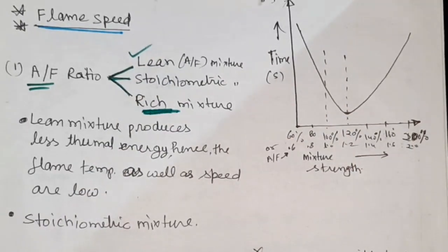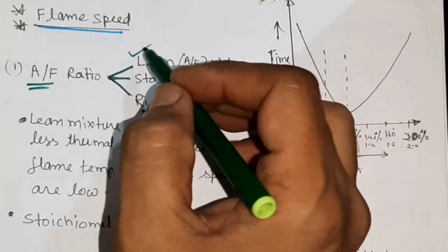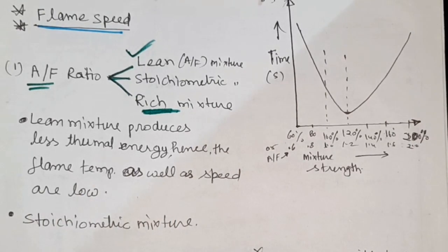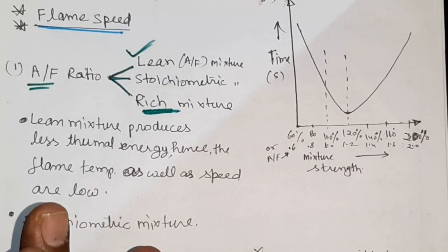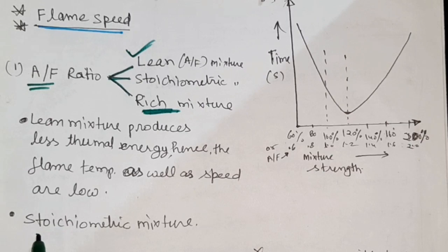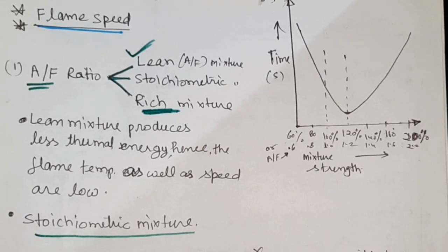In lean mixture, lean mixture produces less thermal energy, hence the flame temperature as well as flame speed are low. Oxidation may take place because of the higher quantity of air present in this case.